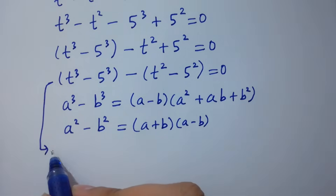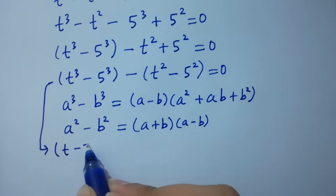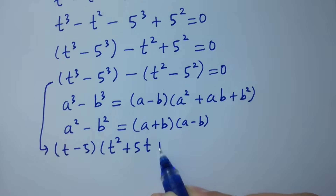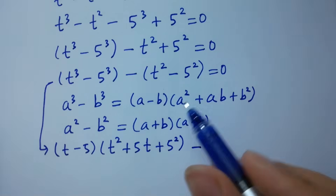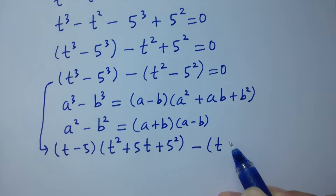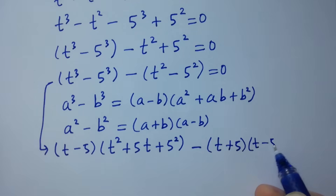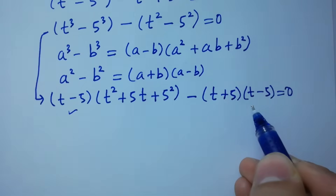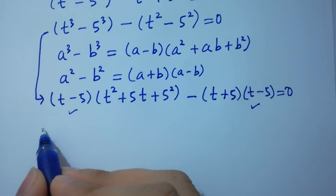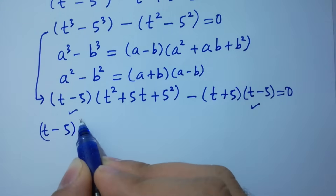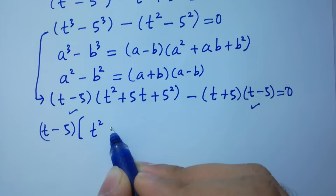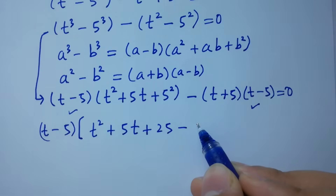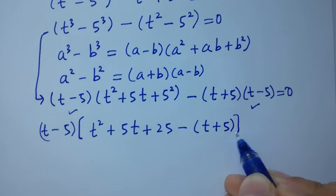Applying these identities, t cubed minus 5 cubed gives us t minus 5 times t squared plus 5t plus 25, and t squared minus 5 squared gives us t plus 5 times t minus 5. So the expression becomes t minus 5 times t squared plus 5t plus 25 minus t plus 5 times t minus 5 equal to 0.